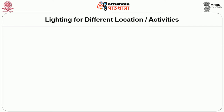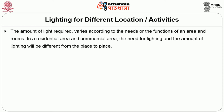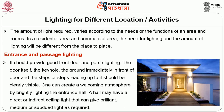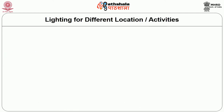Lighting for different locations and activities: The amount of light required varies according to the needs or functions of an area. In residential and commercial areas, the need for and amount of lighting will differ from place to place. Entrance and passage: good front door and porch lighting should be provided. The door itself, the keyhole, the ground immediately in front of the door, and the steps leading up to it should be clearly visible. One can create a welcoming atmosphere with bright or indirect ceiling light that gives brilliant, medium, or subdued light as required.